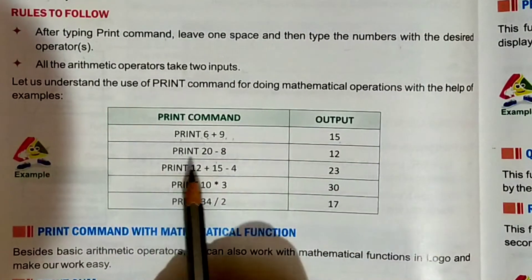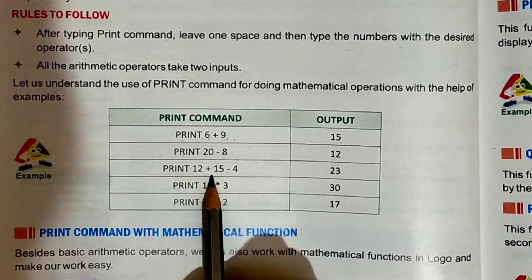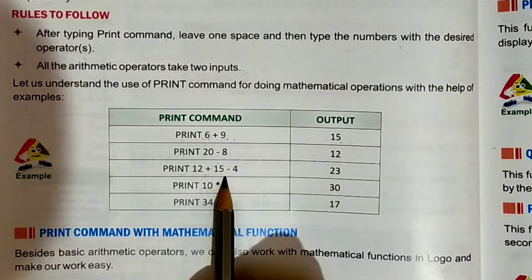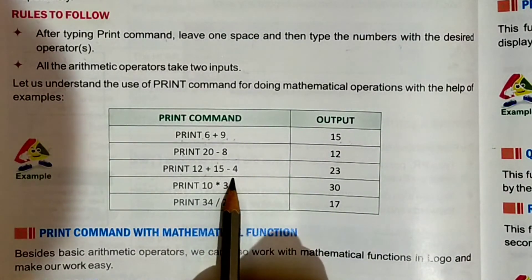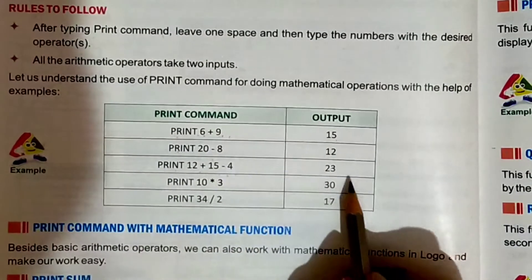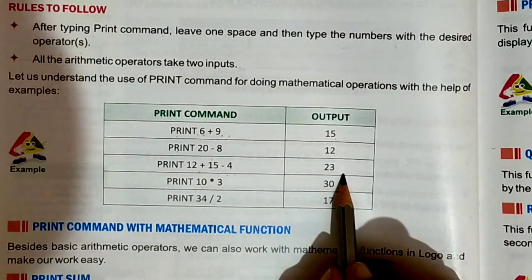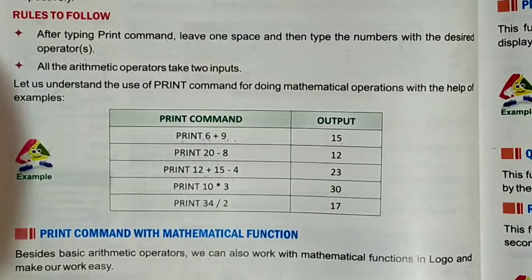Print Command, number is 12, operator is plus, number is 15, operator is minus, and number is 4. Then your output is 23. These are examples of using operators.